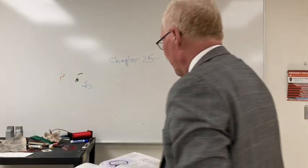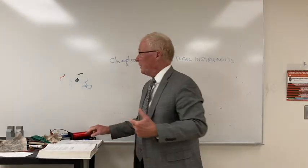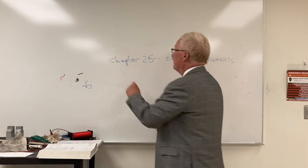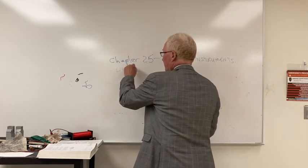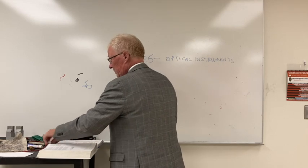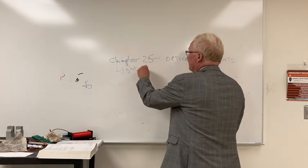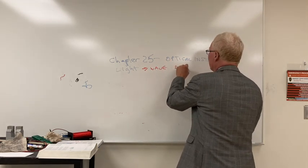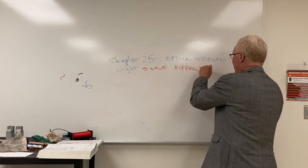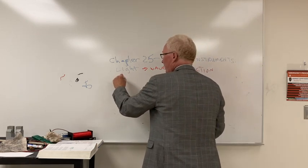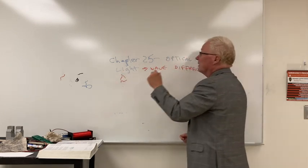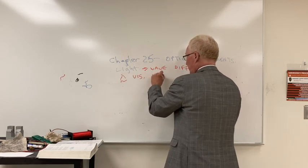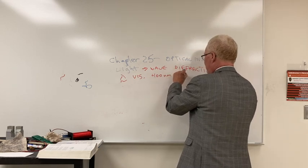What's the smallest object you can see with a regular light microscope? Because light is a wave, there is diffraction, and diffraction is related to the wavelength of the light. Visible light has a spectrum between 400 nanometers and about 700 nanometers.